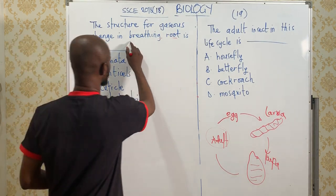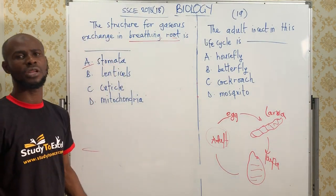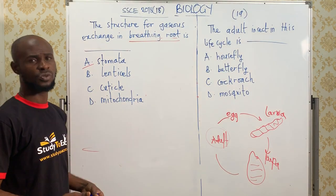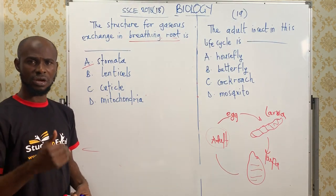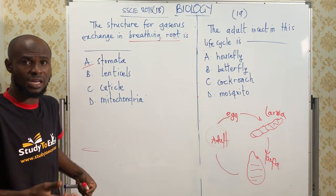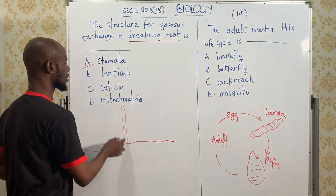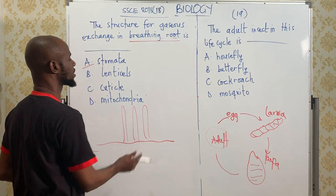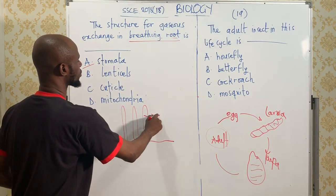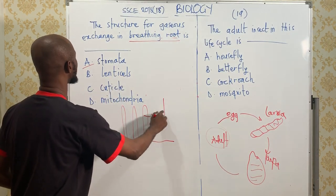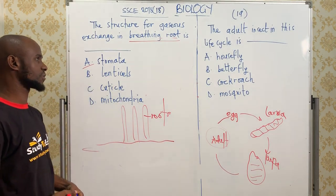What are breathing roots? Breathing roots are a form of aerial roots. Aerial means something above the soil — a form of aerial roots that are found in the mangroves. They are responsible for gaseous exchange. And since they are aerial roots found above the soil, we are going to have the stomata responsible for their gaseous exchange.